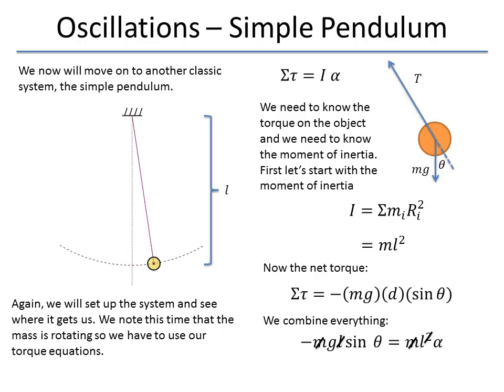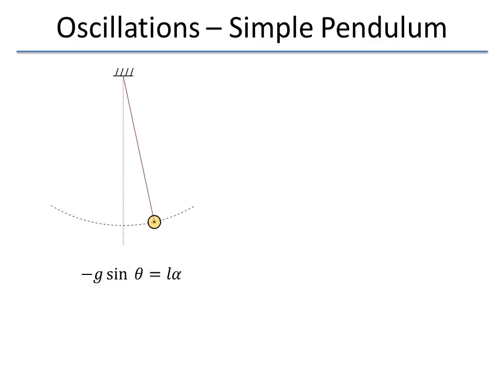We can make another simplification. One of the L's will drop out, but we're still left with an L, so the length probably is going to matter. Also, g is still in there, so g is probably going to matter. We're left with this equation: -g sin θ equals L α.